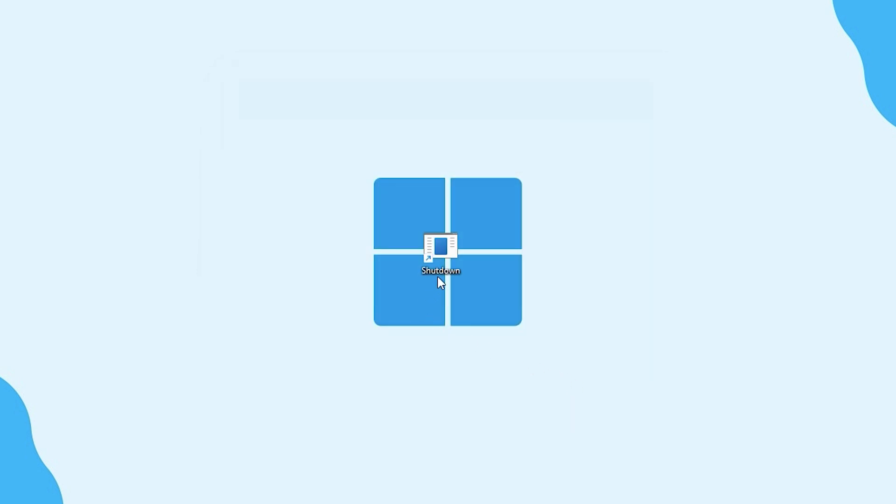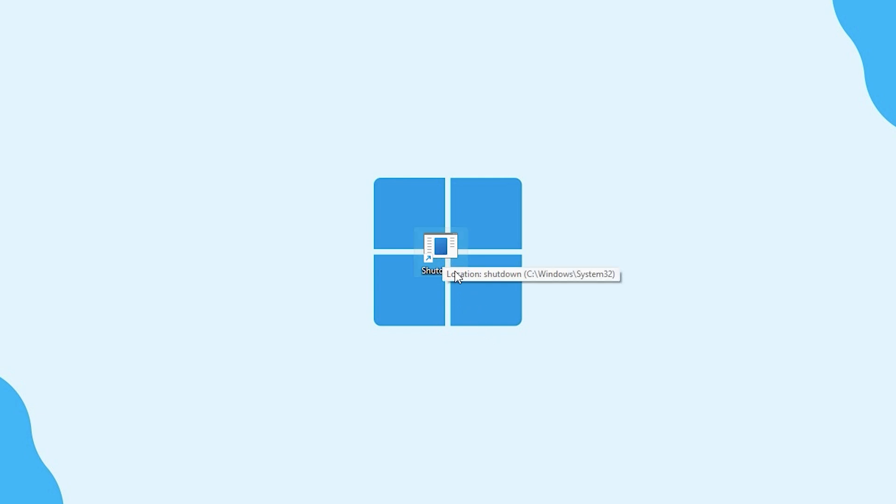You will now see a new icon like this on your desktop — this is your new shutdown button. You can simply double-click on this icon whenever you want to shut down your computer. Remember, this button will shut down your computer instantly, so make sure you have saved all your work before you click it.